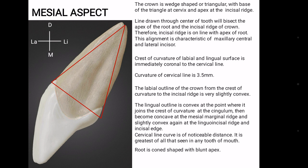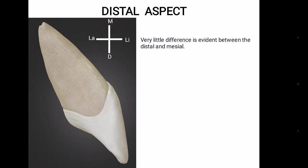Root is cone shaped with blunt apex. Distal aspect is the surface of the tooth which is away from the midline. Distal aspect shows very little difference from the mesial surface.